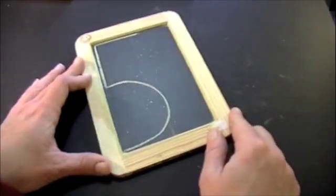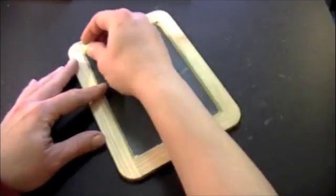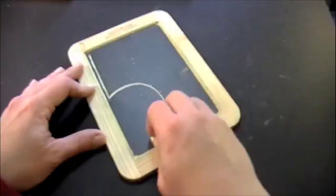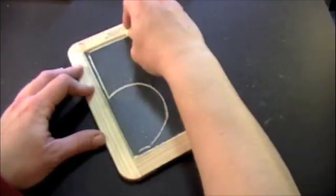Let's write it again. Turn it over. We start at the top. Again, start at the top, big line down to the middle, little curve. Jump back to the top, little line across.